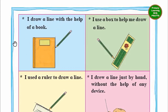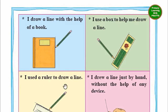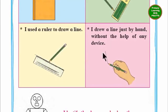I draw a line with the help of a book — you get a standing line or a vertical line. I use a box to help me draw a line; you can use a box also, and this gives an inclined or sloping line. I used a ruler to draw a line; you can also use a ruler. I drew a line just by hand without the help of any device — you can draw lines on your own with your free hand.